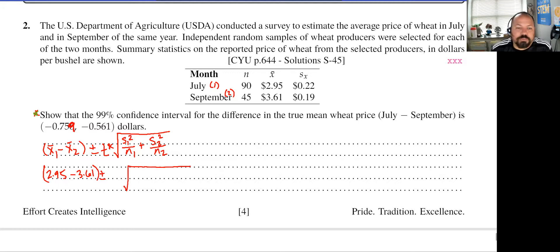minus 3.61 plus or minus, we're going to have to figure out that critical value. And we're going to come in and say, okay, what is going to be that piece? So 0.22 squared all over 90 plus 0.19 squared all over 45. Now up here,